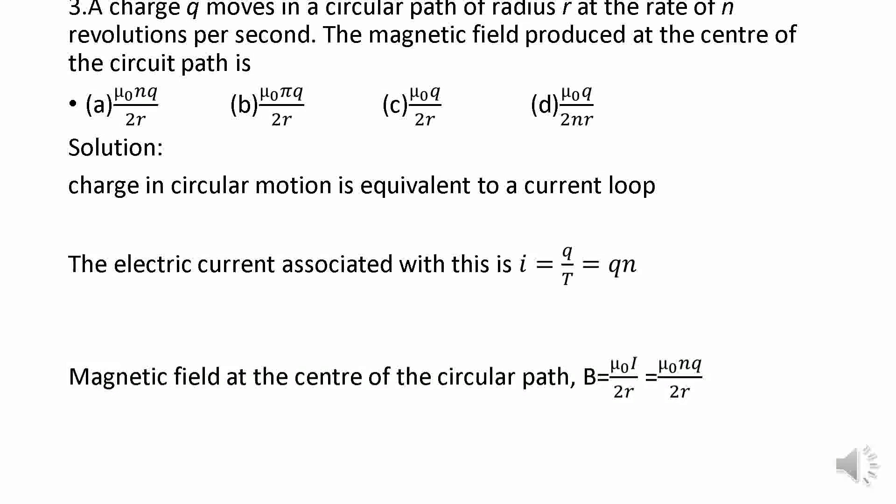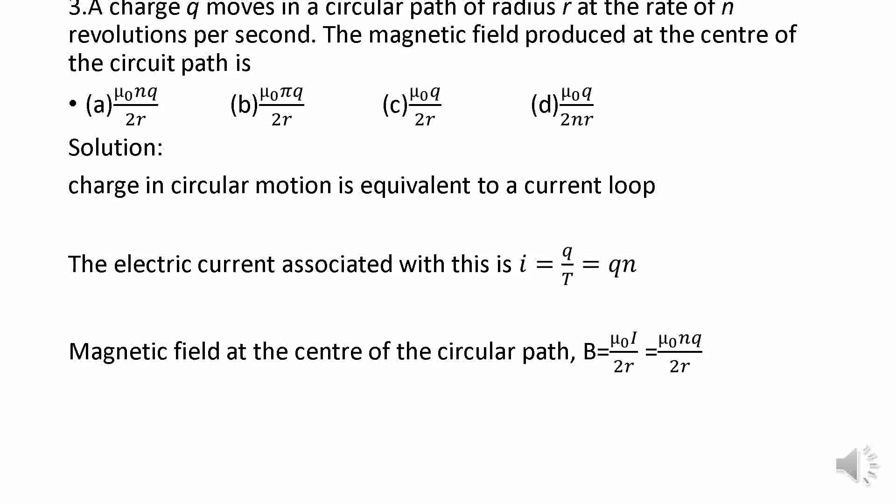The magnetic field at the center of the circular path is given by μ₀i divided by 2r. What is the value of i? i equals nq. Therefore, the right answer is μ₀nq divided by 2r. That is, option a is correct.